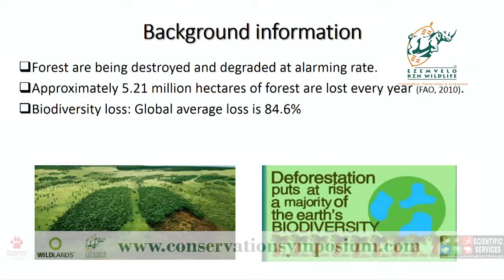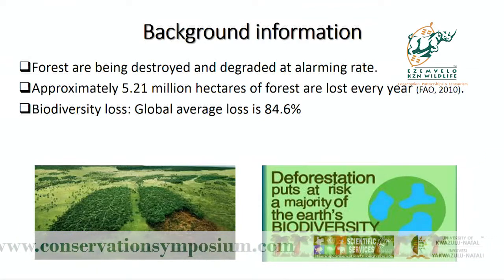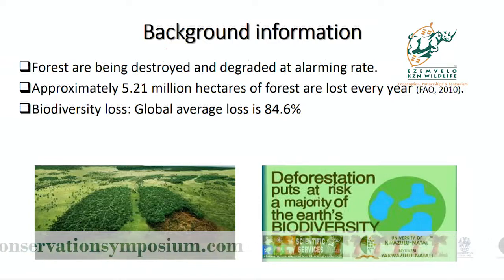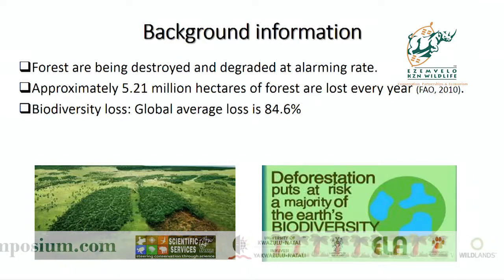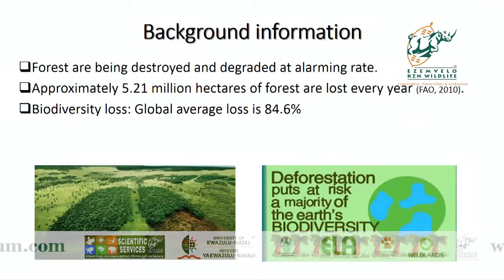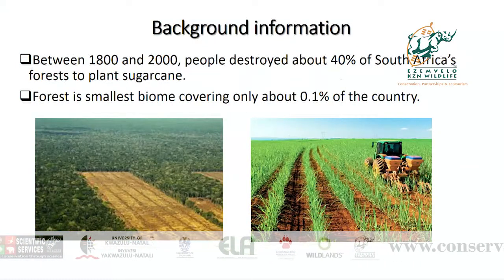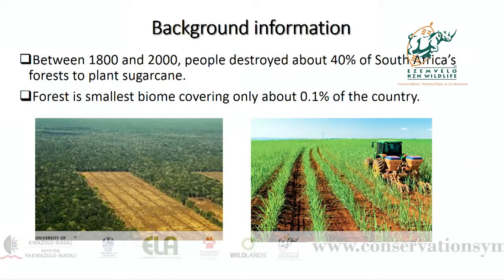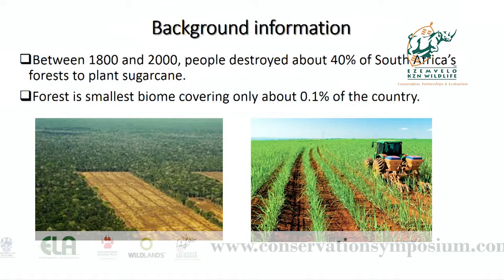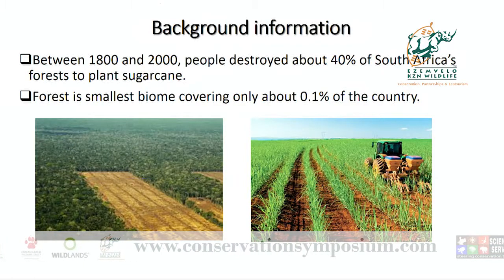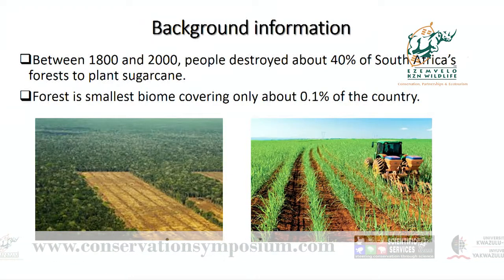It comes as no surprise that this also affects our biodiversity. It has been reported that the global average loss is 84.6% of biodiversity loss. So in South Africa, between the years 1800 and 2000, people destroyed about 40% of forest only to plant sugarcane. And now we are sitting on approximately 0.1% land cover of forest.